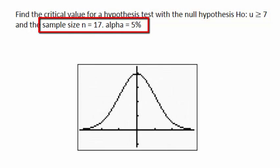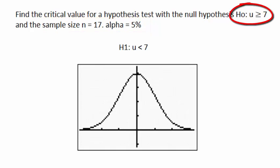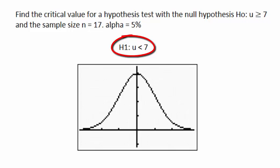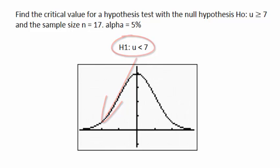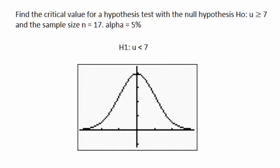The sample size is 17, and we're told that alpha is 5%. Since the null hypothesis is mu greater than or equal to 7, the alternative hypothesis would be mu is less than 7. This means that we are performing a left-tailed test, because the inequality sign in the alternative hypothesis points to the left. Furthermore, the sample size n is equal to 17, which is 30 or less, so therefore we will be doing this hypothesis test using the Student t-distribution as opposed to the normal distribution.